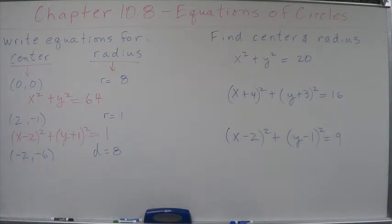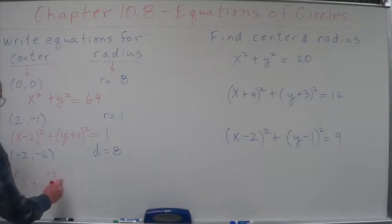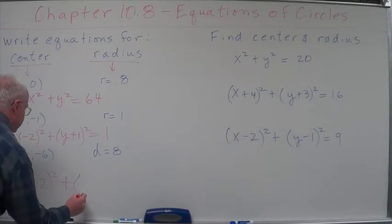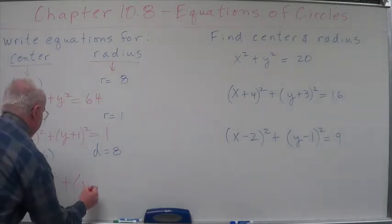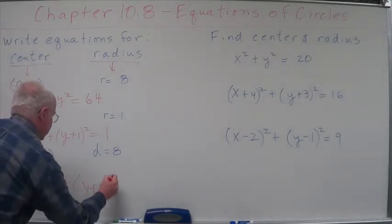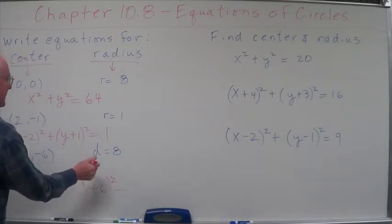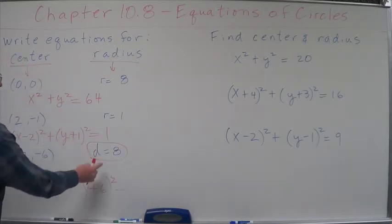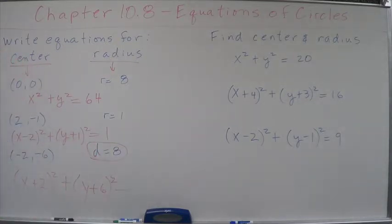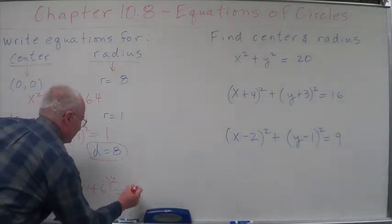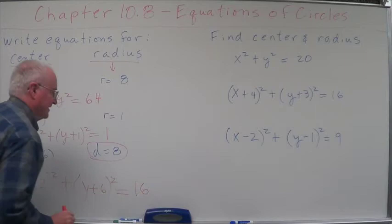Let's look at this one. The center is at negative 2, negative 6. We subtract these from it, so what's that going to look like? If we subtract the negative, we end up with a positive plus y plus 6 squared. Now, this says diameter equals 8. If we have a diameter of 8, what is the radius? It's 4, so this is going to be 16.